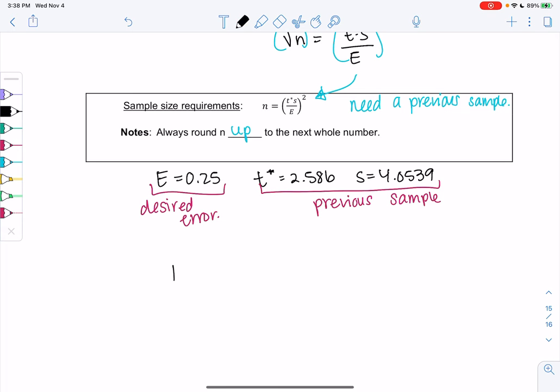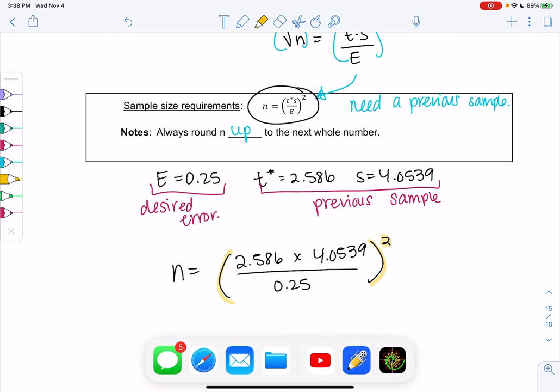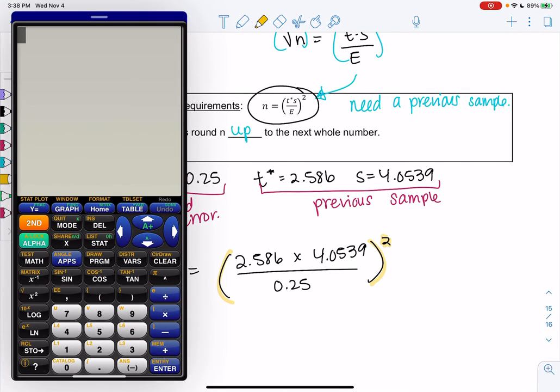Let's plug in. N equals 2.586 times 4.0539 all over 0.25, and then we'll square everything. So make sure you type parentheses on your calculator. 2.586 in parentheses times 4.0539 divided by 0.25. Notice all three numbers in the parentheses, and we'll square it.